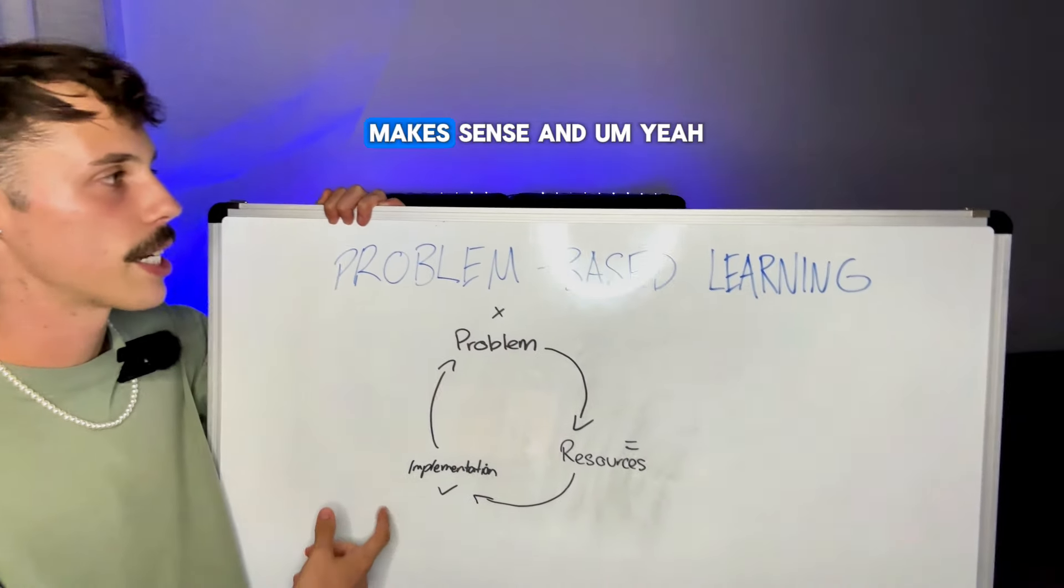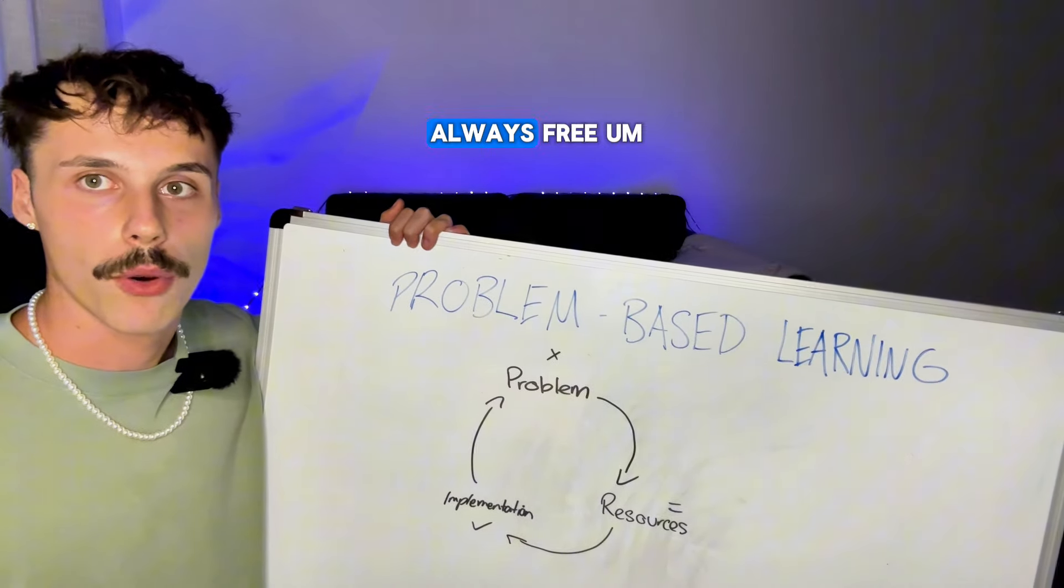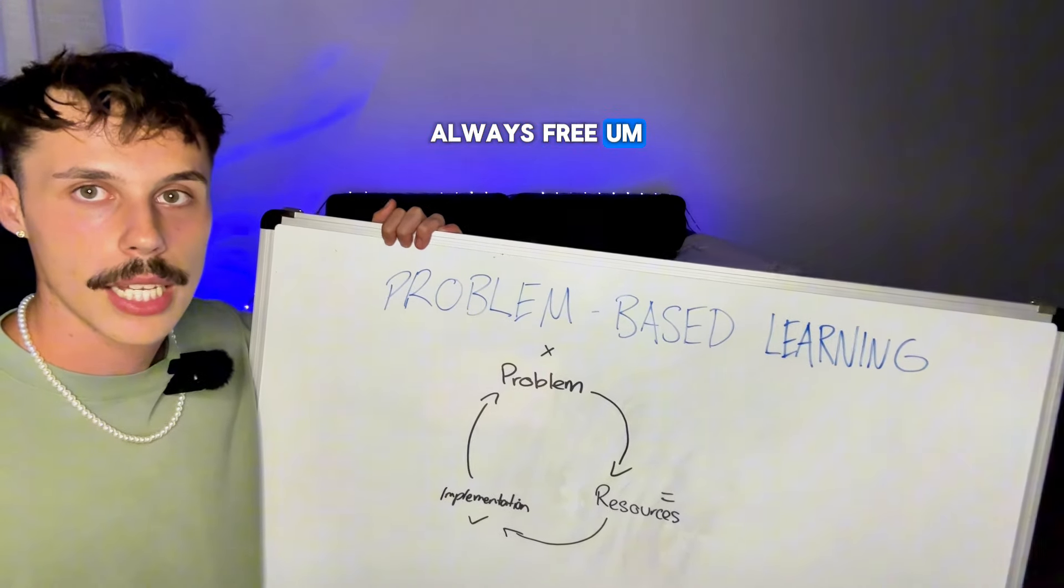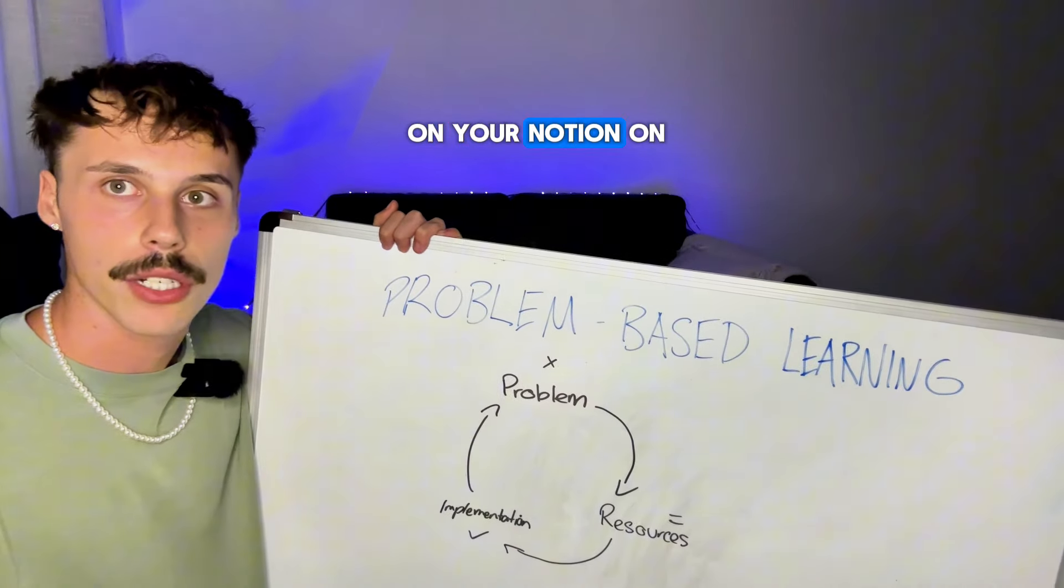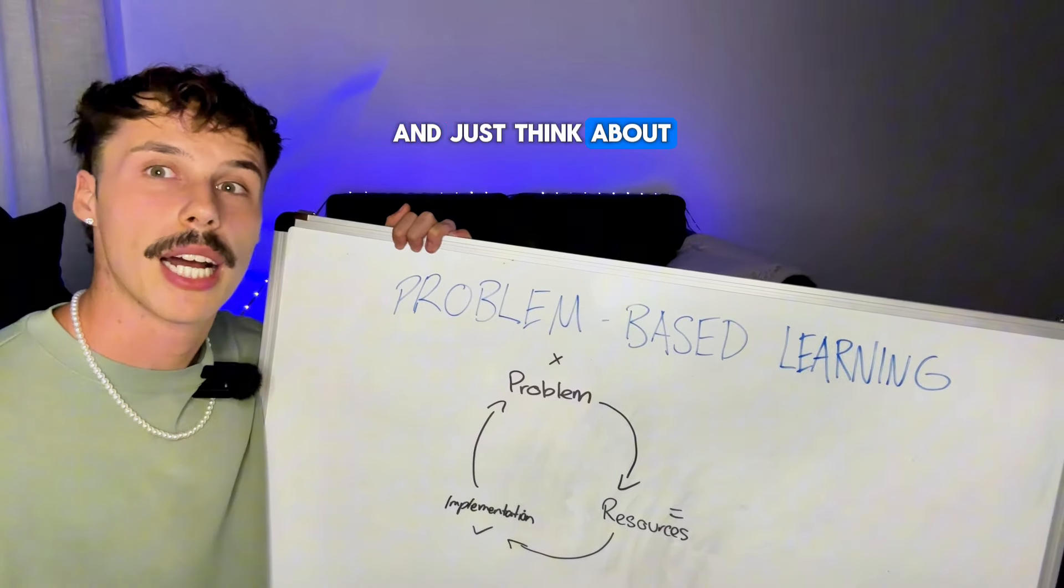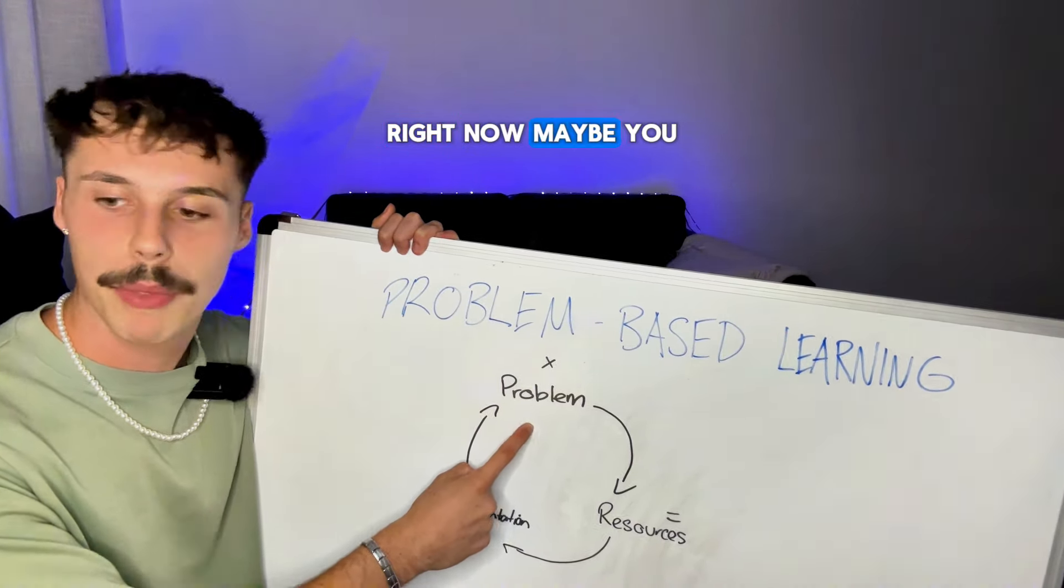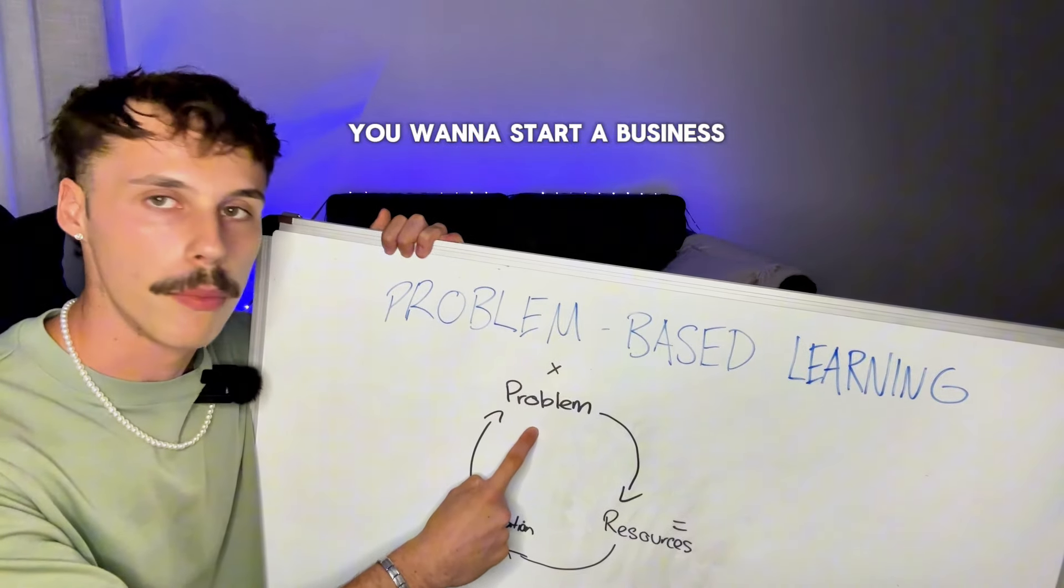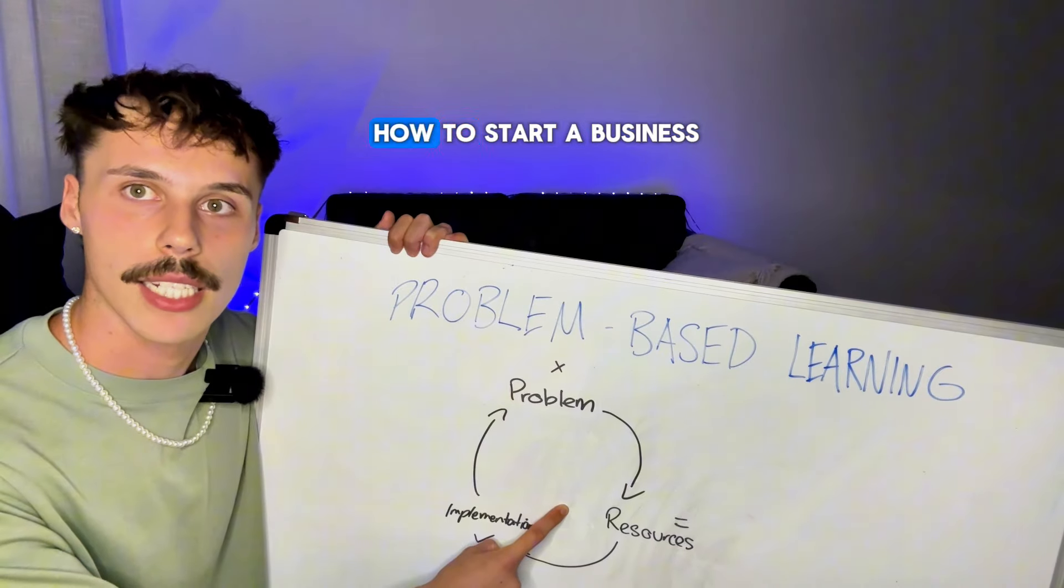So I hope this makes sense. And if you have any questions about it, my DMs on Instagram are always free. It's very simple. And just, you know, draw this cycle up on your notion, on your whiteboard, if you have one, on a piece of paper. And just think about it. Think about what are the deepest problems you're facing in your business right now. Maybe you don't have a business. Then what's your problem? You want to start a business. You don't know where to start.